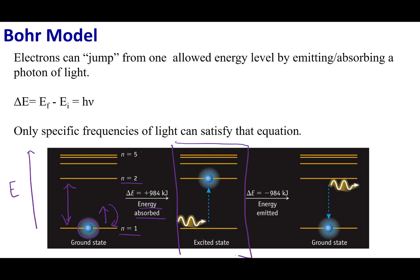Once it's in the excited state, we have a high-energy atom. Nature always likes to return to the lowest energy form, so the electron is going to fall back down. When it falls back down, it has to give up energy. One way it can do that is by giving up that energy as light — a photon. This is called emission. When I emit a photon from an excited state, the energy of that photon corresponds to the drop in energy the electron takes. We can calculate the change in energy — delta E — for each absorption or emission process.